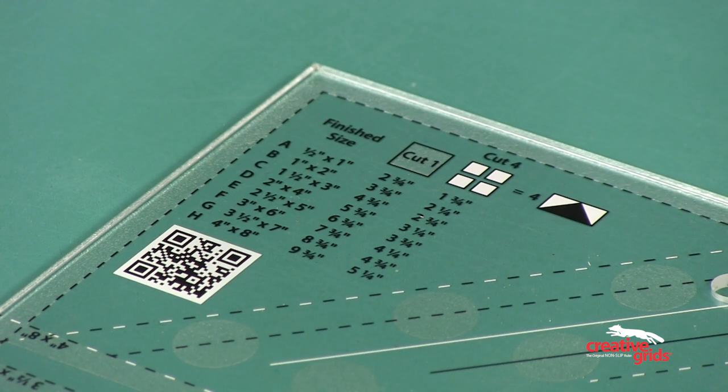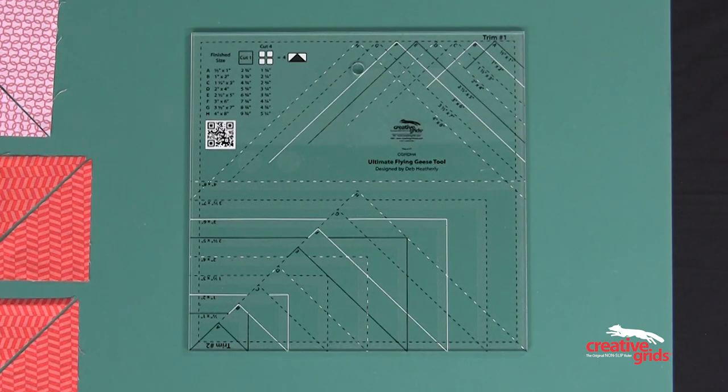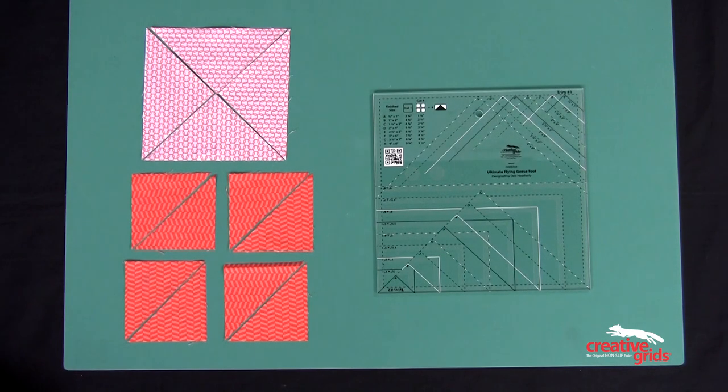The printed cutting chart on the ruler now works for two different methods. Or oversize your own favorite method for making flying geese and then use the Ultimate Flying Geese tool to trim your geese to perfection. There are eight different geese available on this tool.